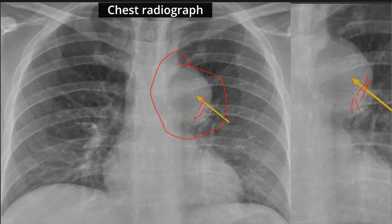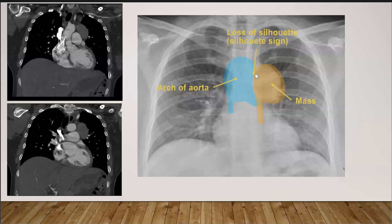It is left to be in the anterior mediastinum. There is another sign: the mass is in contact with the aortic arch and is causing silhouetting with the aortic arch, confirming it is an anterior mediastinal mass.